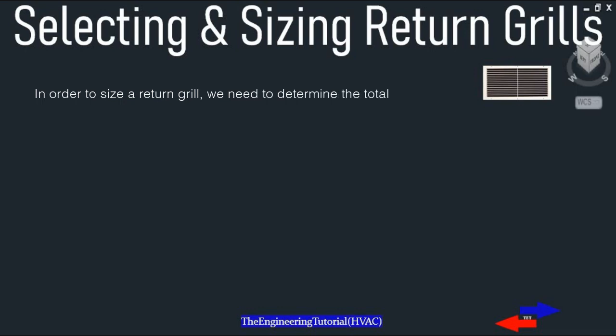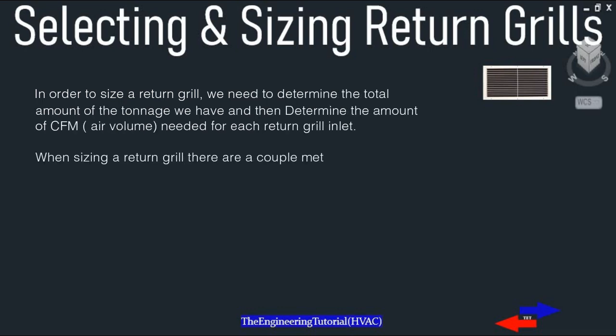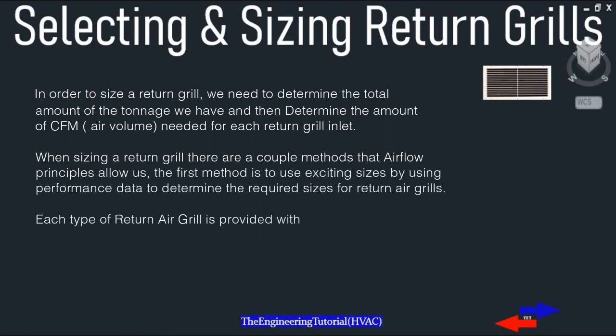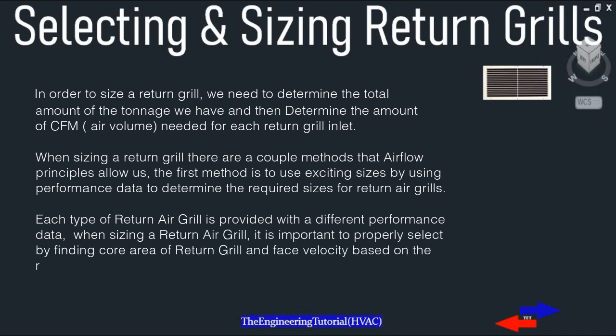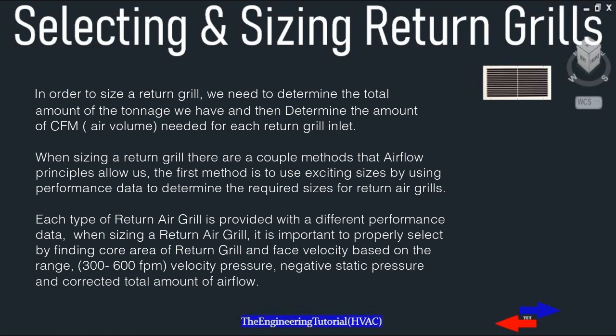In order to size a return grill, we need to determine the total amount of tonnage and then determine the amount of CFM air volume needed for each return grill inlet. There are a couple of methods. The first method is to use existing sizes by using performance data to determine the required sizes for return air grills. Each type of return grill is provided with different performance data. It is important to properly select by sizing the core area and face velocity.